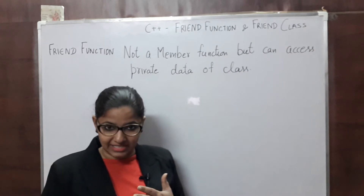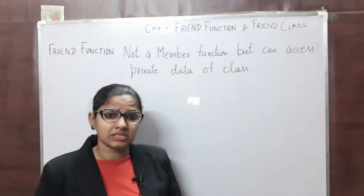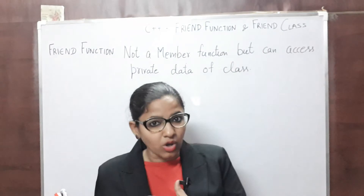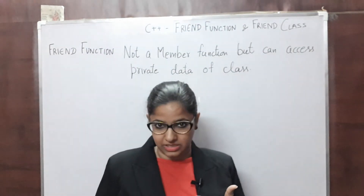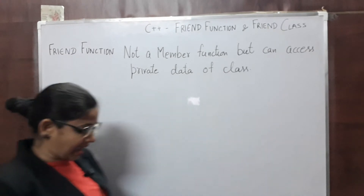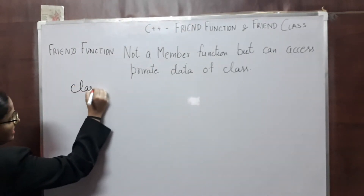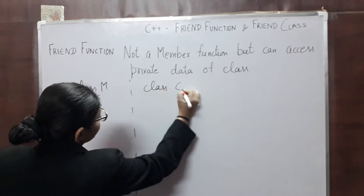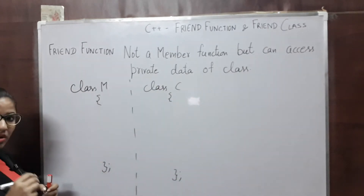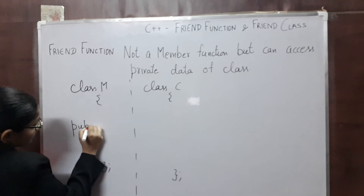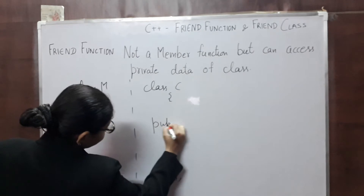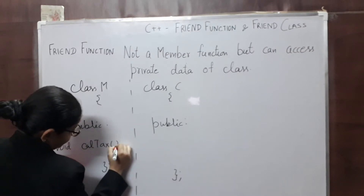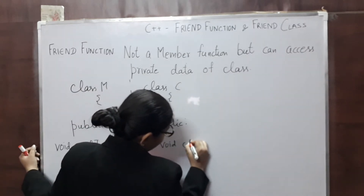Let's see this with an example. I will take the case of a banking system. In a bank, we have managers and we have clients. They both are earning and they both will pay income tax. So I am defining two classes: class M for manager and class C for client. As they both are earning, they both have one common function in their public section — void calculate_tax.